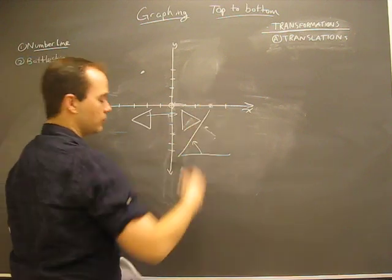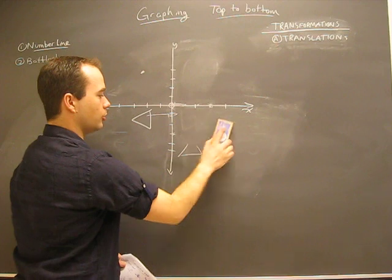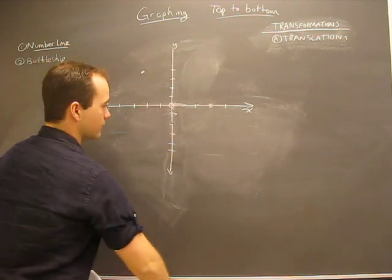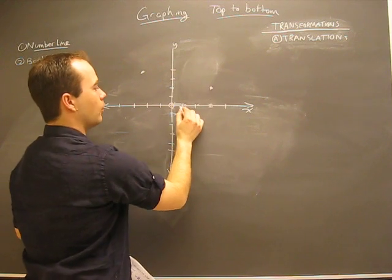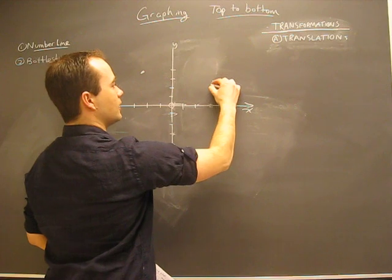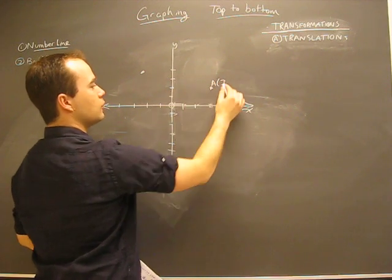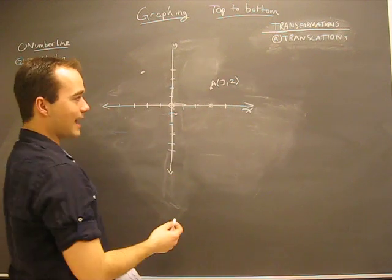So the first thing we'll do is translation, and we're just going to talk about a point. Just a regular old point because now we know how to graph points. So here's a point. One, two, three. So point A, its x value is three. And it's two high, so its y value is two. So that's the description for point A.